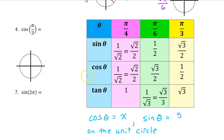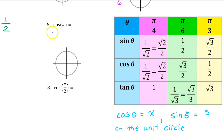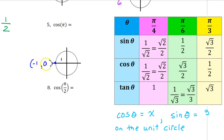For number 4, the cosine of pi over 3 is right on the chart, so there's no work to do — the answer is simply 1 half. For number 5, pi is a multiple of pi over 2, so we use coordinates instead of the chart. On the unit circle, the coordinates of this point are (negative 1, 0). Cosine is the x value, and the x coordinate is negative 1, so the cosine of pi is negative 1.